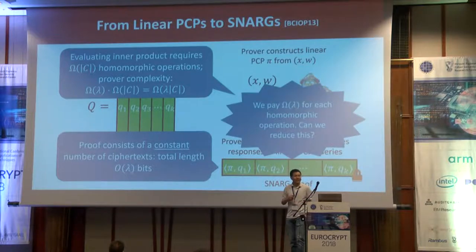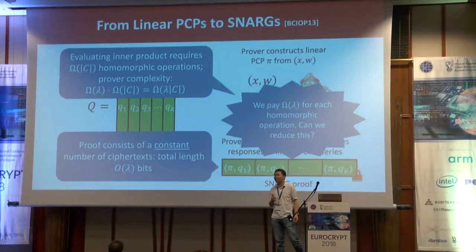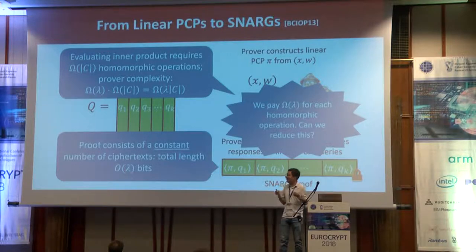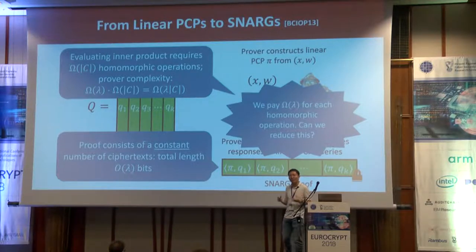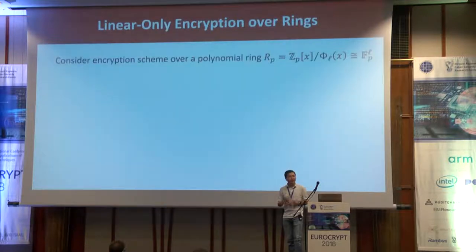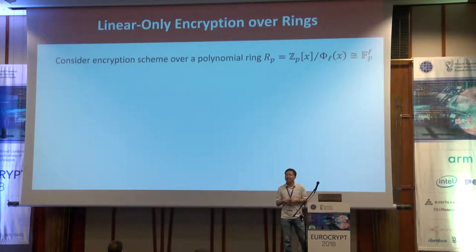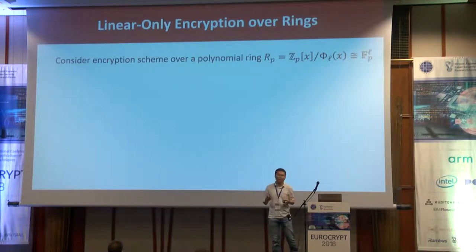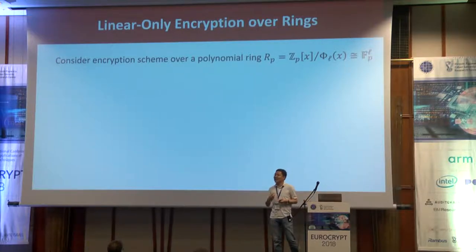Another way to look at this barrier: we pay a cost of order λ for every homomorphic operation we do, and if the number of homomorphic operations is proportional to the size of the circuit, the overall prover complexity is suboptimal by this λ factor. The way to overcome this barrier is to use a different kind of linear-only encryption scheme. Instead of encrypting a single field element at a time, we encrypt a vector of field elements — or in algebraic terms, we consider an encryption scheme where the underlying plaintext space is a polynomial ring that splits into a vector of field elements.